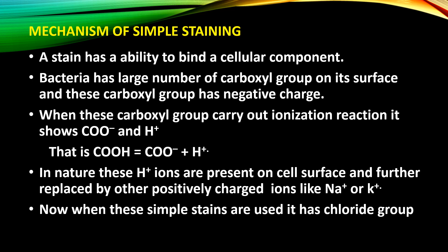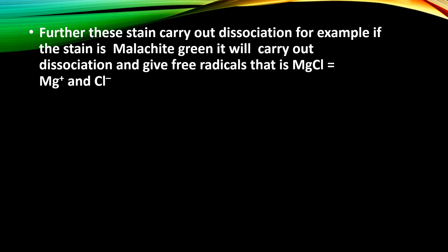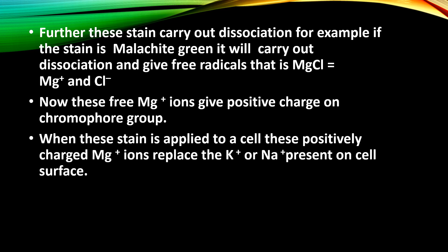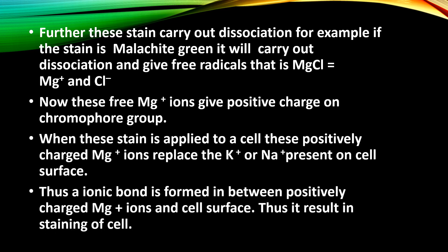When simple stains are used, they contain a chloride (Cl⁻) group. The stain undergoes dissociation — for example, malachite green (MgCl) dissociates to give free radicals of MG⁺ and Cl⁻. These MG⁺ free radicals give a positive charge on the chromophore group, so the stain carries a positive charge. When the stain is applied to a cell, these positively charged MG⁺ ions replace the K⁺ or Na⁺ ions present on the cell surface.